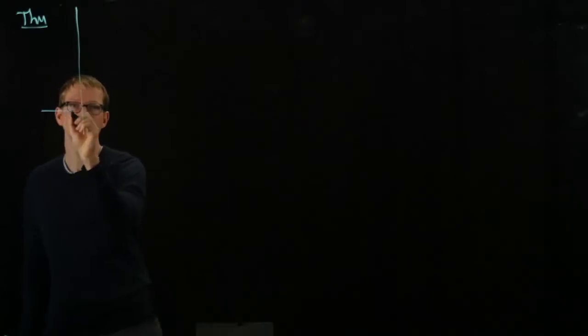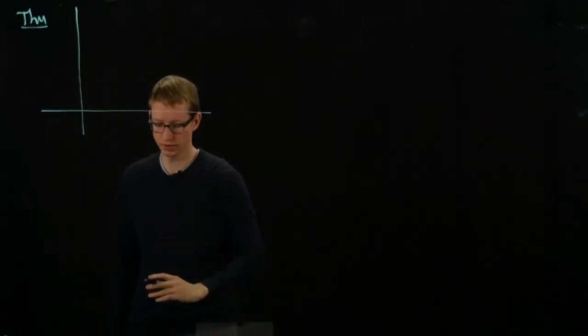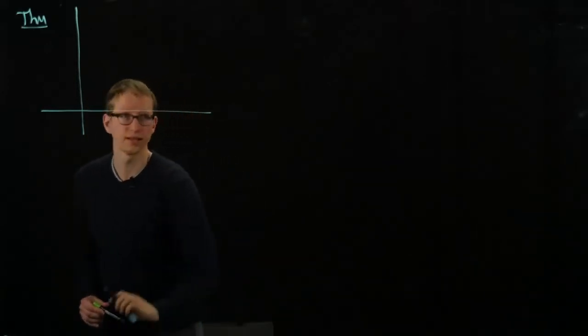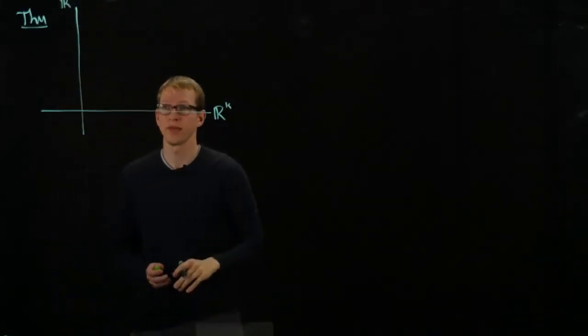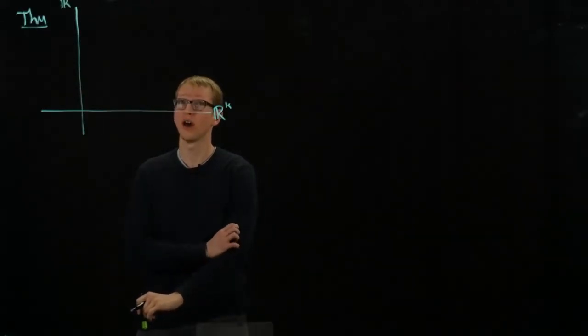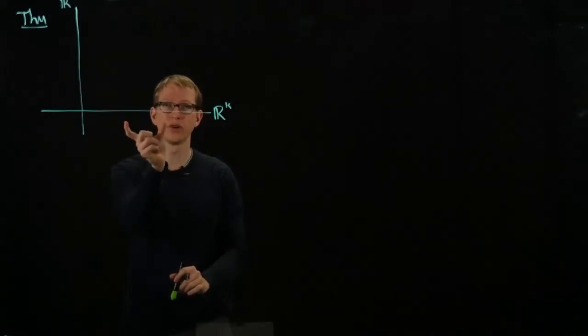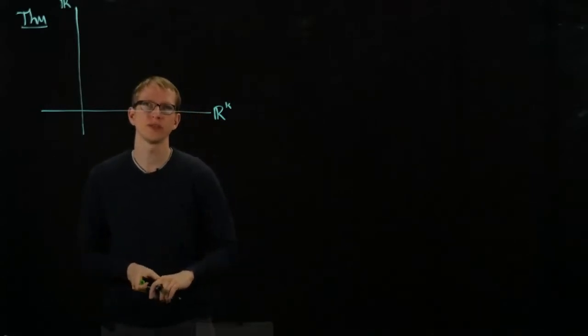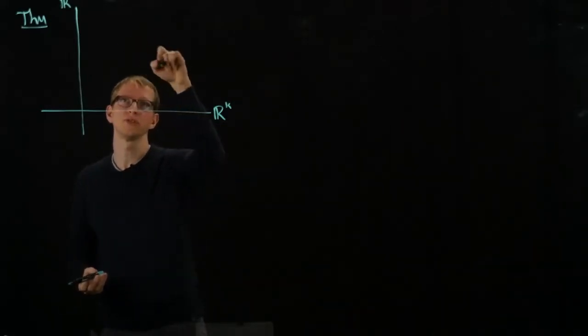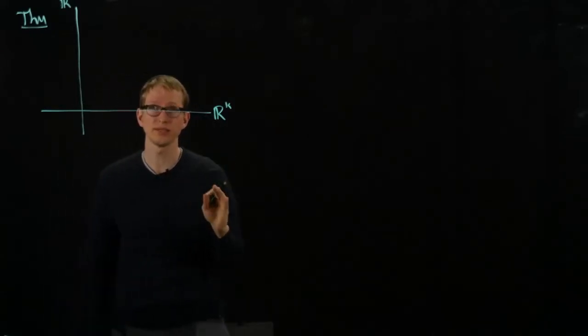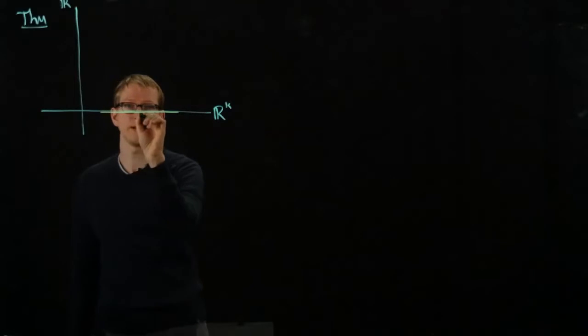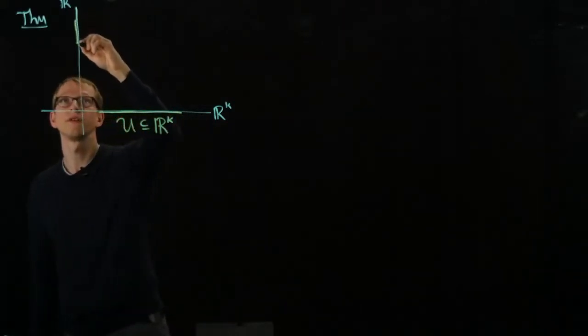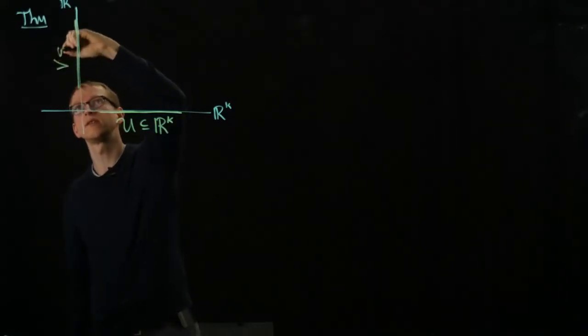So we're going to focus on a particular function that's defined on a subset of R^K cross R^N. It's going to be defined specifically on a product of an open subset of R^K and an open subset of R^N. So here we have an open subset U of R^K, and here we have an open subset V in R^N.